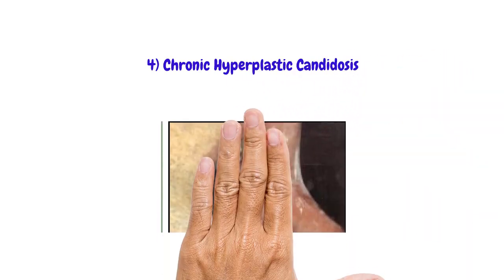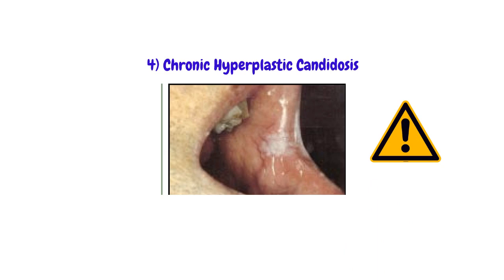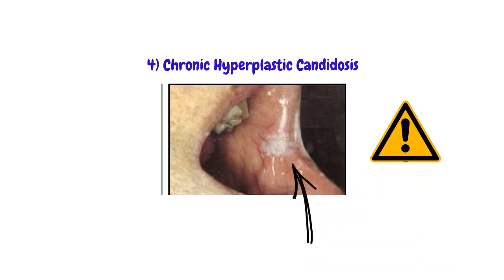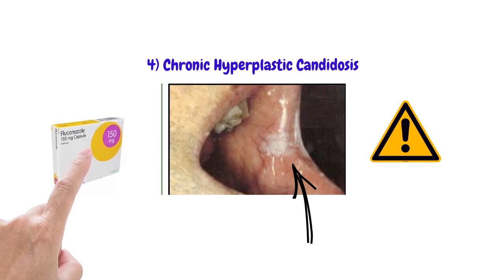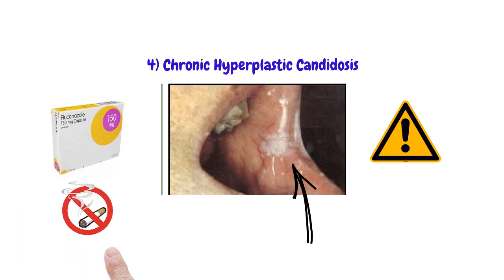Chronic hyperplastic candidiasis is a relatively rare form of oral candidosis and carries an increased risk of malignancy, so biopsy is essential. This type may be associated with varying degrees of dysplasia, with oral cancer present in a high proportion of cases. You will see white adherent plaques that can be nodular or speckled, typically presenting in the bilateral commissure regions and dorsum of the tongue. In contrast to pseudomembranous candidosis, the white plaques do not rub off. Treatment involves systemic antifungals such as fluconazole and smoking cessation.